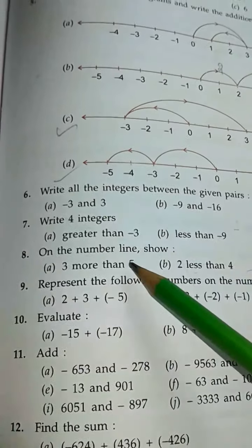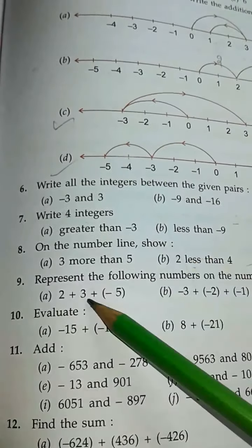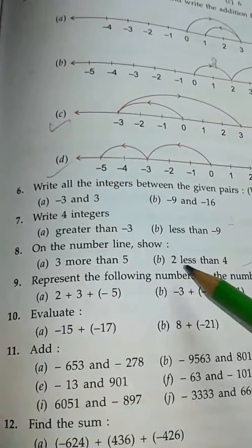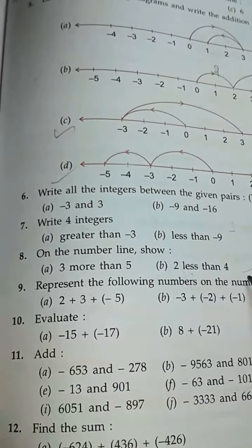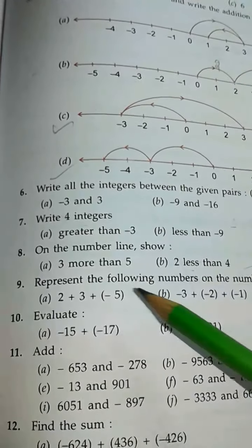Question 8: on the number line, show 3 more than 5, 2 less than 4. Children, you draw one number line, then you show.